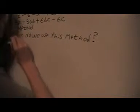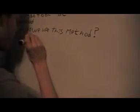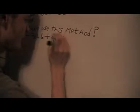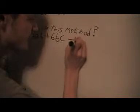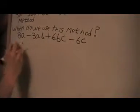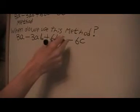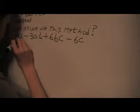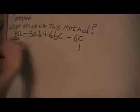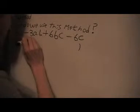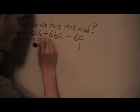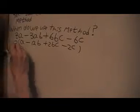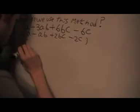Now let's look at the third example, which is a bit more challenging: 3a - 3ab + 6bc - 6c. In this expression there's a common factor of 3 for the whole expression, so I'm going to take that out first, leaving 3(a - ab + 2bc - 2c).